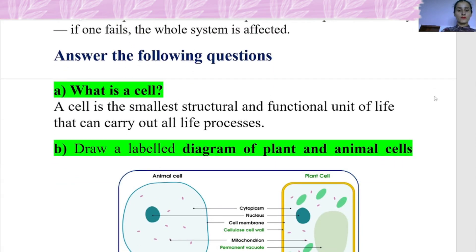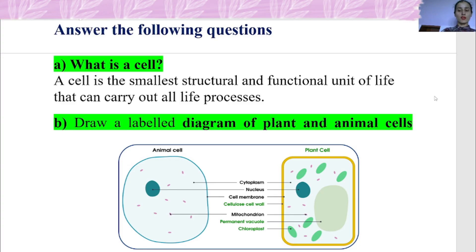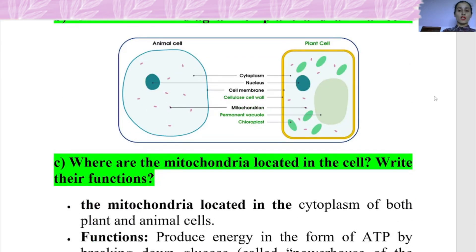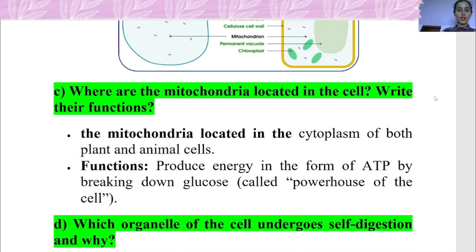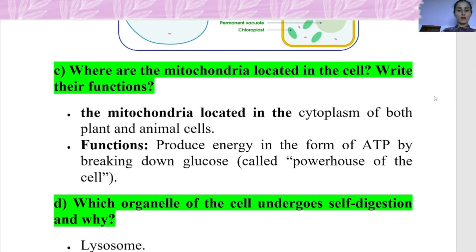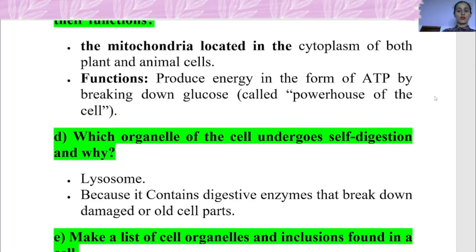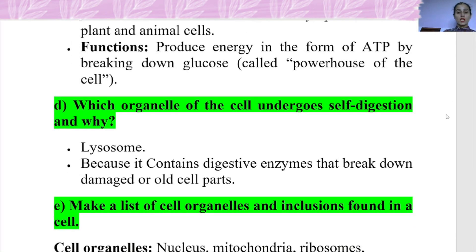In the question and answer section: What is a cell? The cell is a small structural and functional unit of life that carries out all the life processes. Where are the mitochondria located in the cell? Mitochondria are located in the cytoplasm, and their function is to produce energy in the form of ATP by breaking down glucose. Which organelle of the cell undergoes self-digestion? Lysosome.